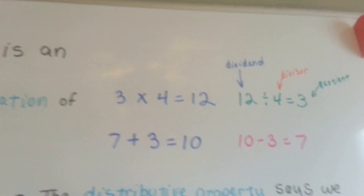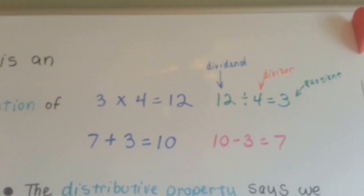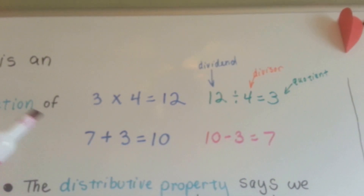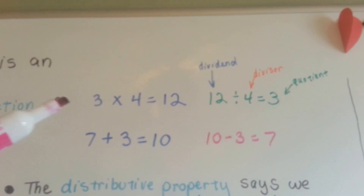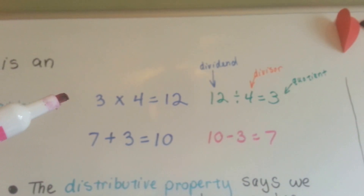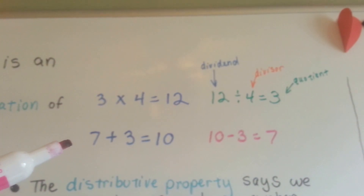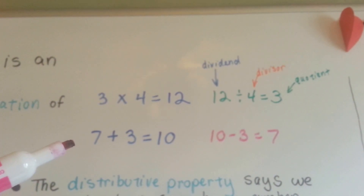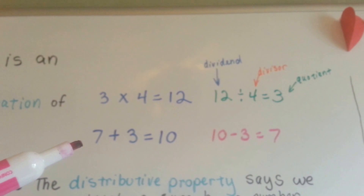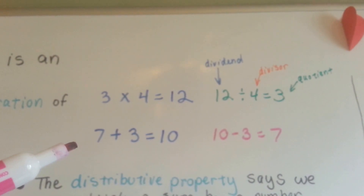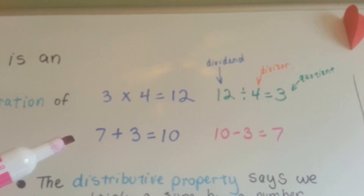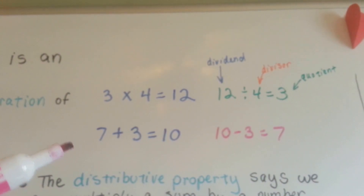Look at these. 3 times 4 is 12. 12 divided by 4 is 3. That's the inverse. 7 plus 3 is 10. 10 minus 3 is 7. That's the inverse.